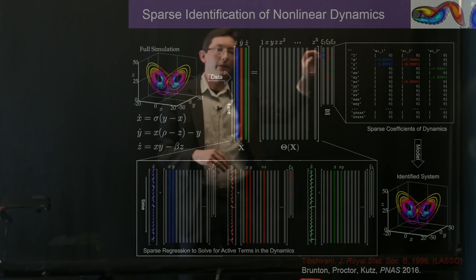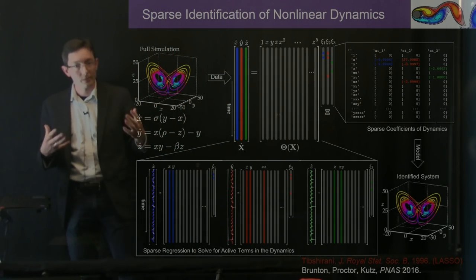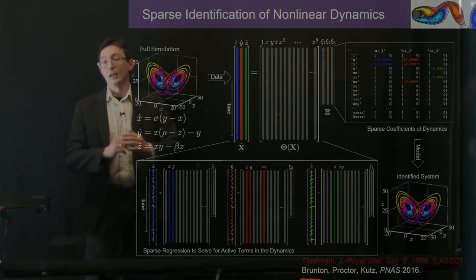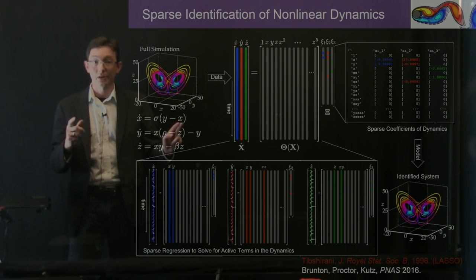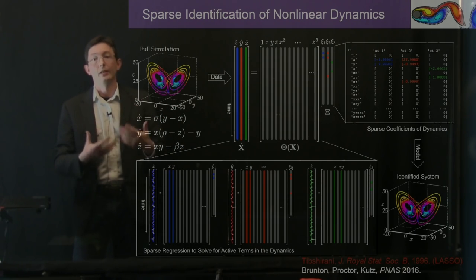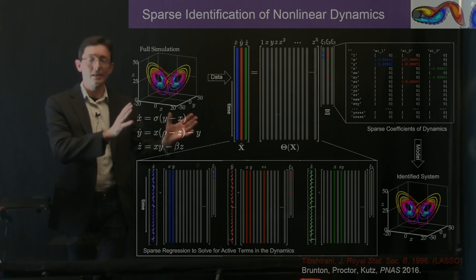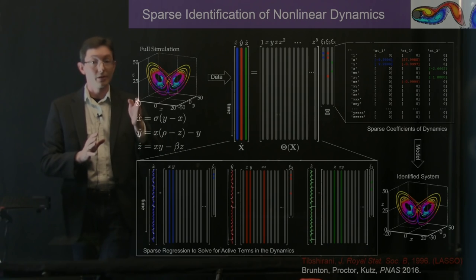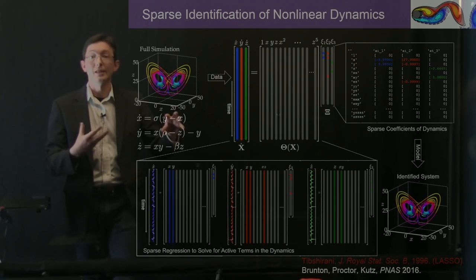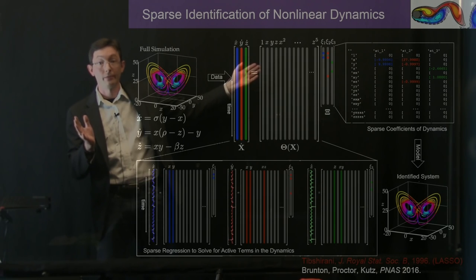When we put this all together, we find the nonlinear model in terms of coefficients indicating which terms in the nonlinear function space are active. The identified system is virtually identical to the true system — it has the same structure, virtually the same parameters sigma, rho, and beta, and it captures the dynamics on the attractor. This is a relatively simple idea that takes advantage of the fact that, if we measure in the right coordinates, the right-hand side dynamics are sparse in the space of possible right-hand side dynamics — in this case, polynomials up to order five.